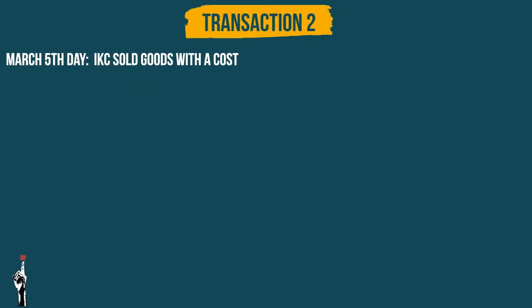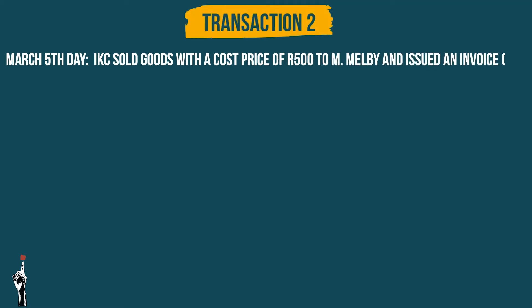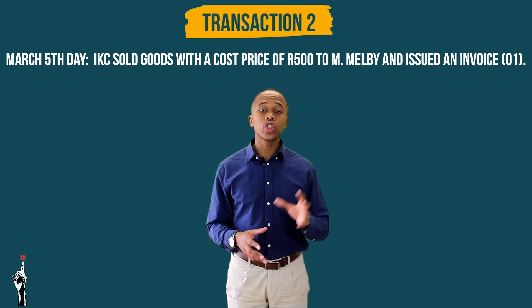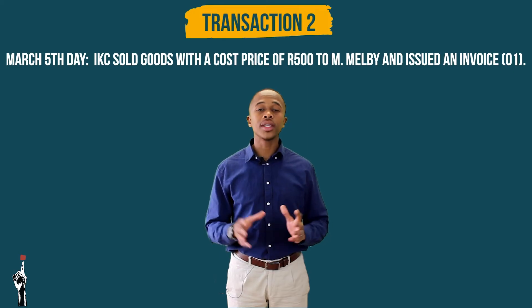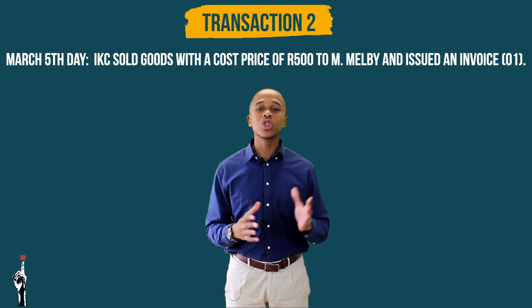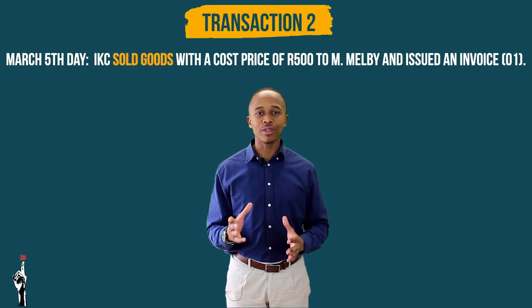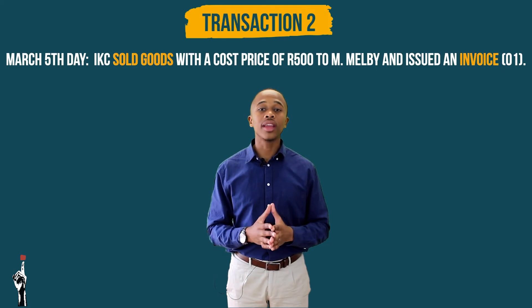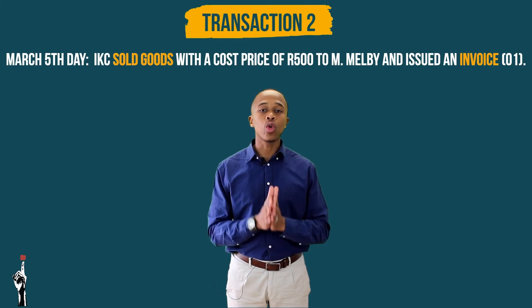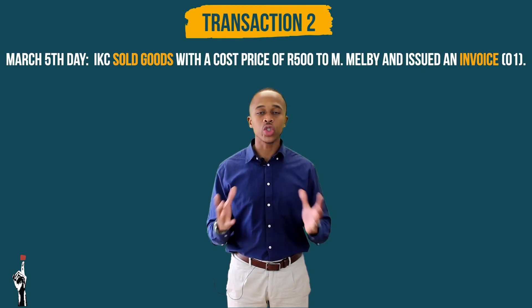Alright learners, are you ready for the next transaction? Let's go! IKC sold goods with a cost price of 500 Rand to M Malby and issued invoice number 1. Now remember grade 9s, we have to stop, evaluate and look at the keywords. The words 'sold goods' and 'invoice' should indicate that this transaction should be recorded on the debtors journal.